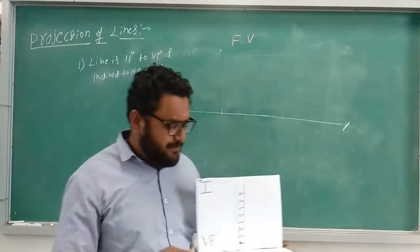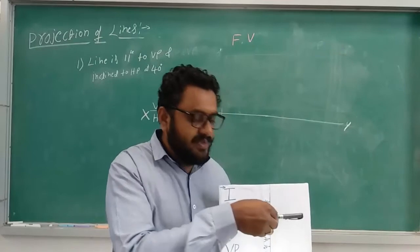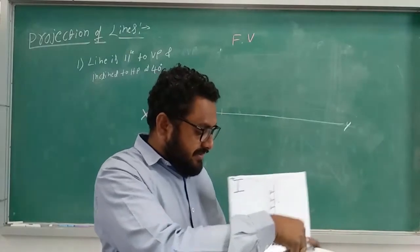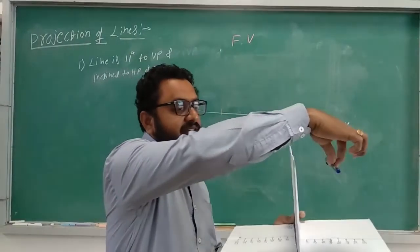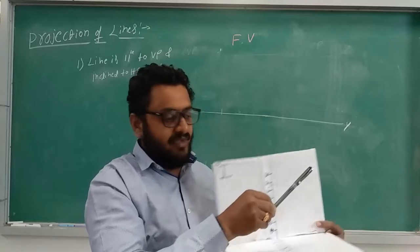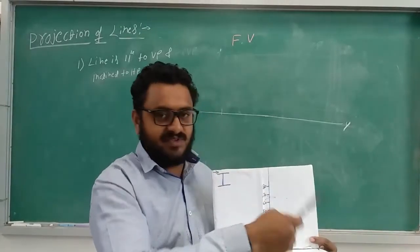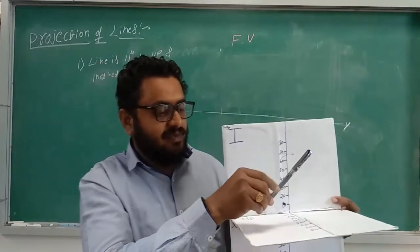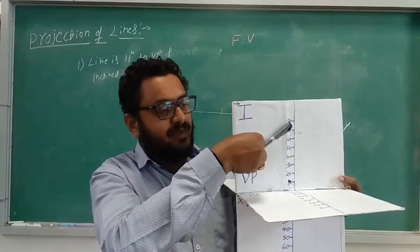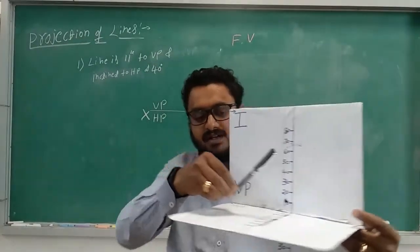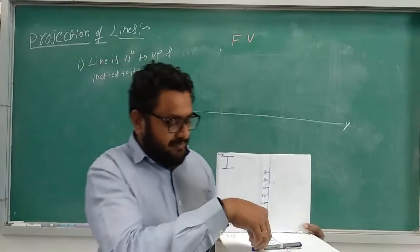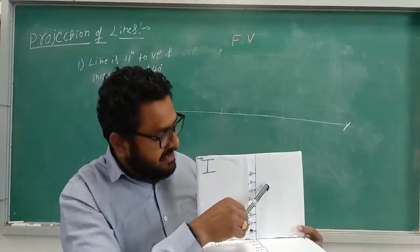In this next case, the line will be kept parallel to VP and inclined to HP. When we maintain it parallel to VP and make inclination to HP, the inclination angle will appear on the line. You can see the inclination, but it remains parallel to VP. The angle forms as the line becomes inclined, so we need to understand how the front view and top view will look.